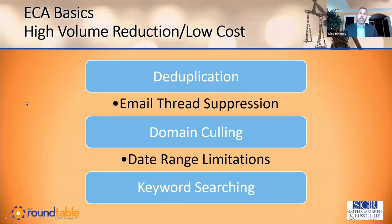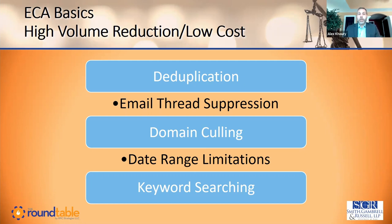Now let's talk about how to do ECA. The basic traditional ECA tactics are deduplication, email thread suppression, domain culling, date range limitations, and keyword searching. Almost everybody is using these steps, or at least some of them. All of these techniques are really designed to reduce the volume of document hosting, which reduces your costs — not just hosting, but also review costs. That's perceived as the greatest value of ECA, and it probably still is.